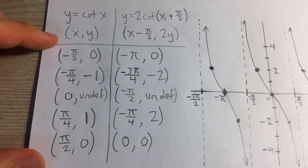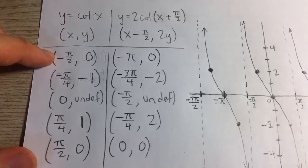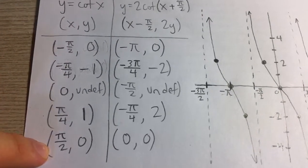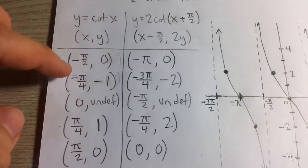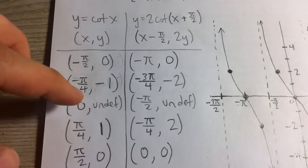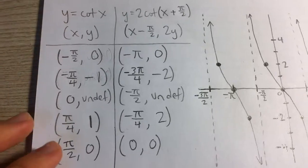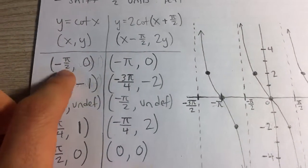So if you plug in, I plugged in x from negative pi over 2 all the way to pi over 2 and I found the y value, just the cotangent of that value, where cotangent is 1 over tangent, and then I subtracted pi